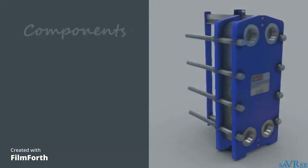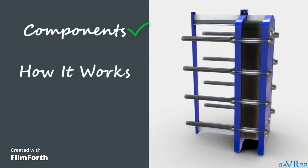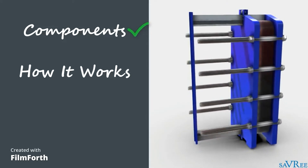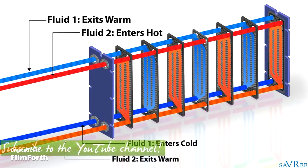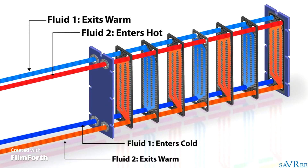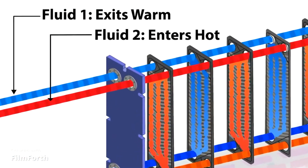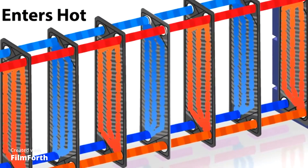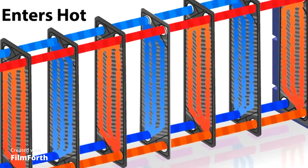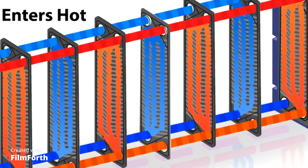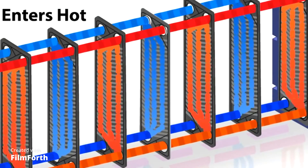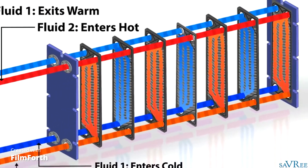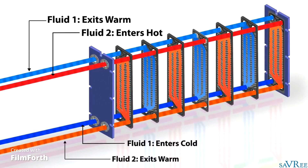Now we know the plate heat exchanger's main components, let's look at how it works and some of its design features. For demonstration purposes, we will assume we have two flowing mediums — one cold and one hot. The hot medium enters through the hot medium inlet. Gaskets direct the hot medium as it flows through the heat exchanger. Each plate has an alternating gasket pattern, so the hot medium flows into the space between a pair of plates but does not flow into the next pair because the gaskets prevent this.